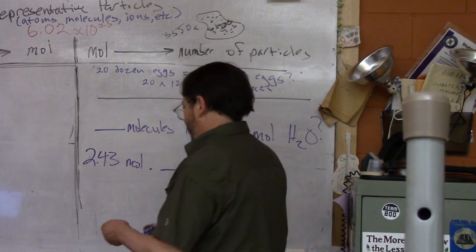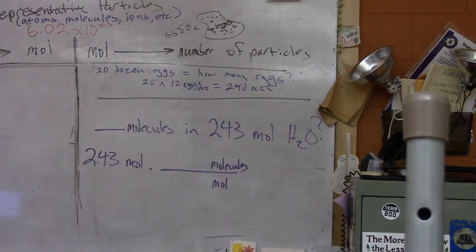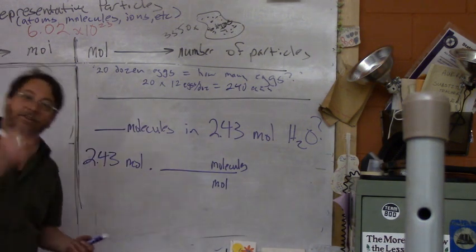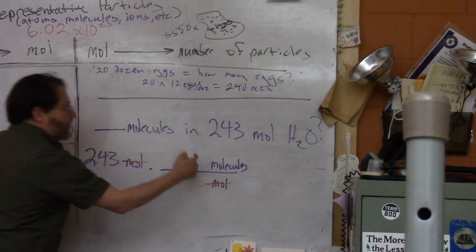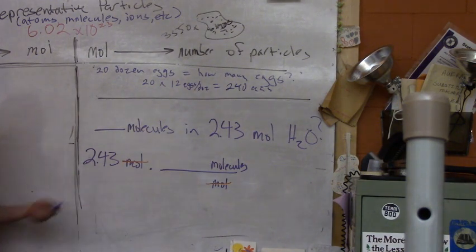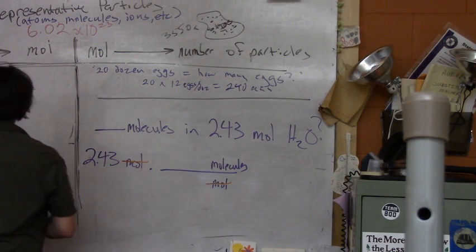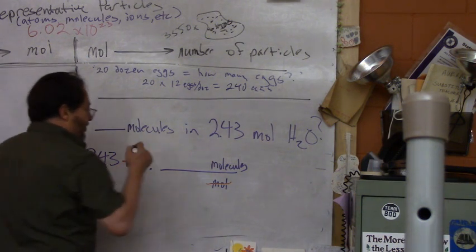Moles on the bottom to cancel out. You want moles to cancel out and you want molecules left when you're done. Which one of those is that? It's the one with Avogadro's number of molecules on the top.